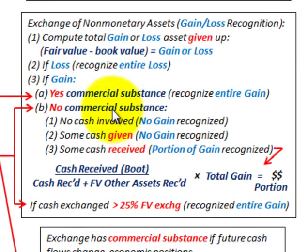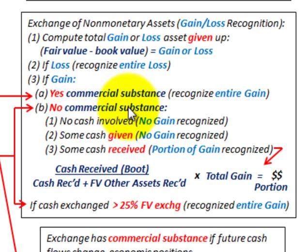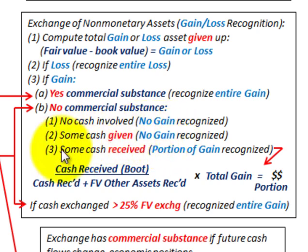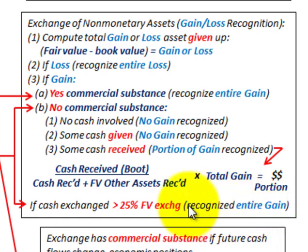First, we look at the case where we have commercial substance, and then where there isn't any. With no commercial substance: no cash involved means no gain; some cash given up also means no gain. But in our case, some cash is given up and there is a gain, because if the cash exchange is greater than 25% of the fair value of the exchange, you recognize the entire gain.